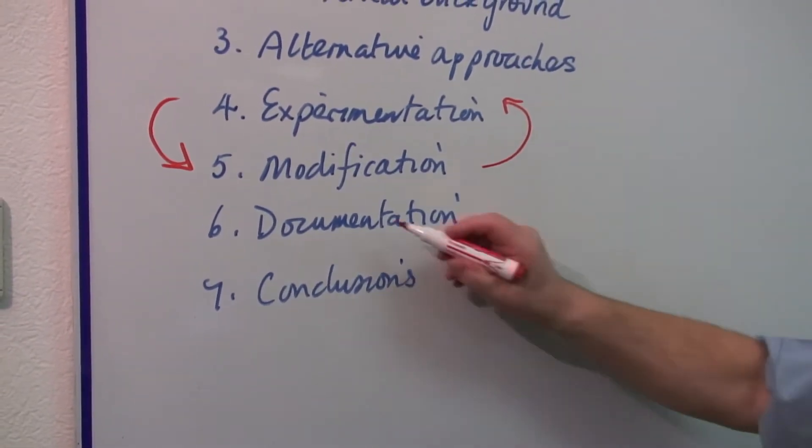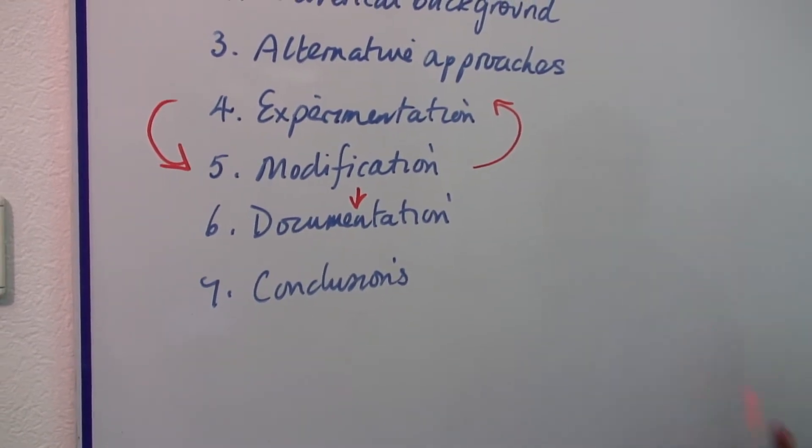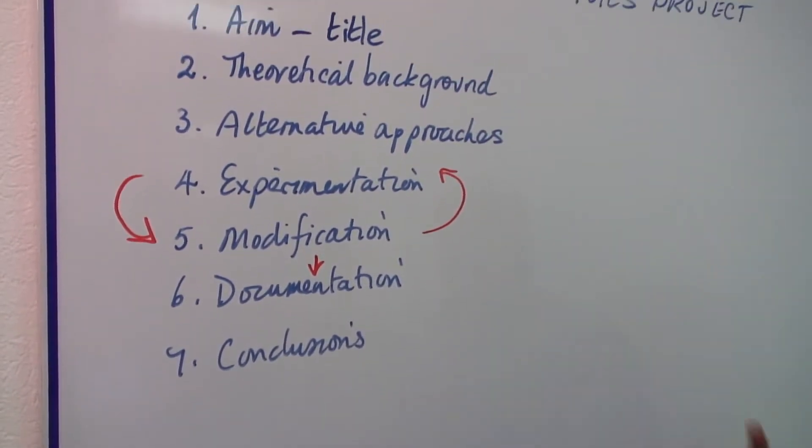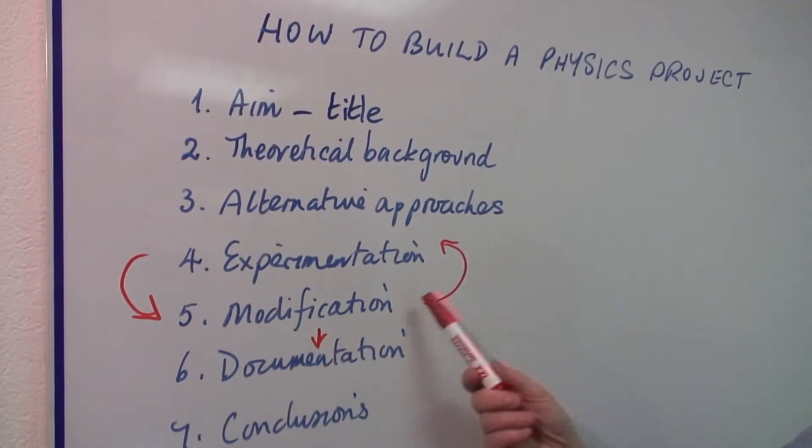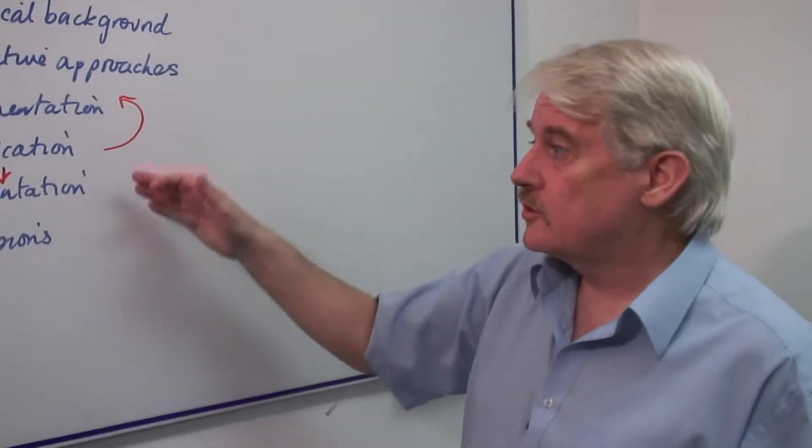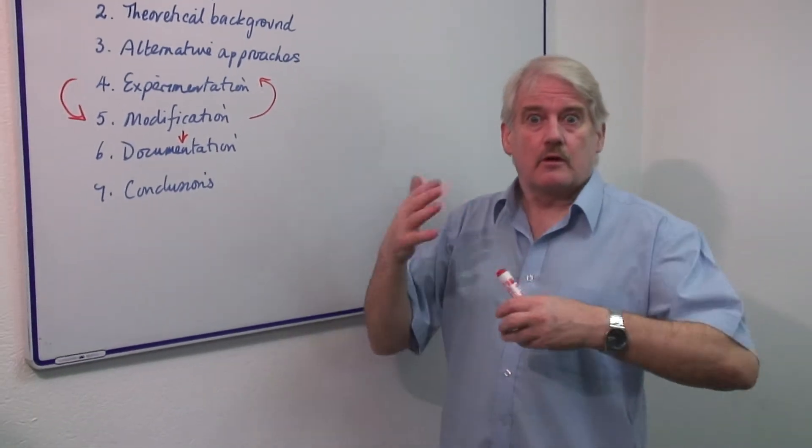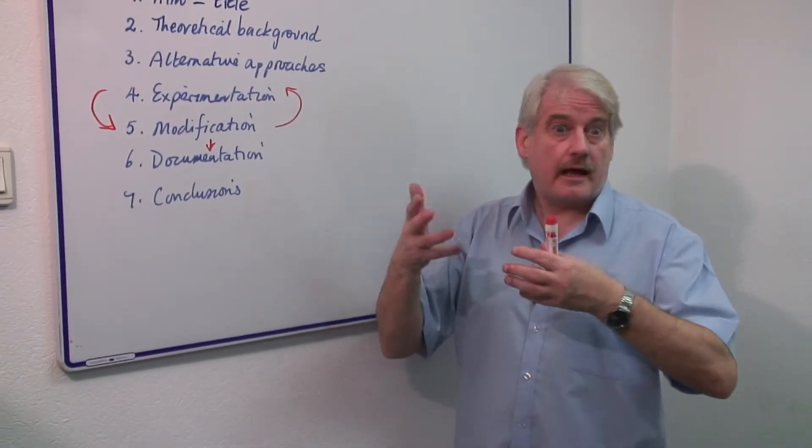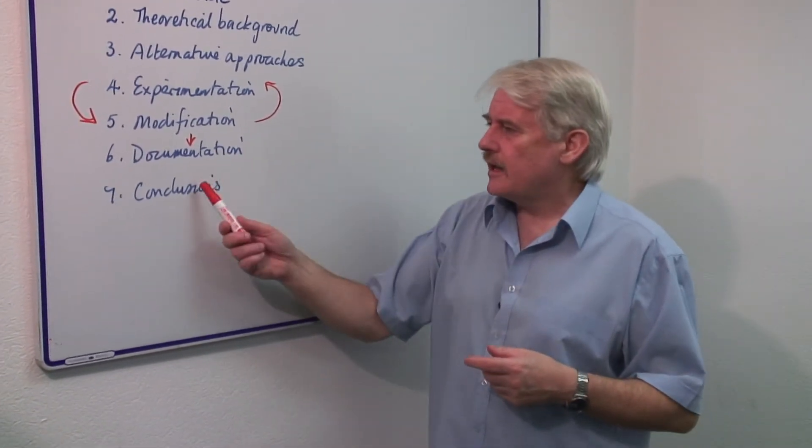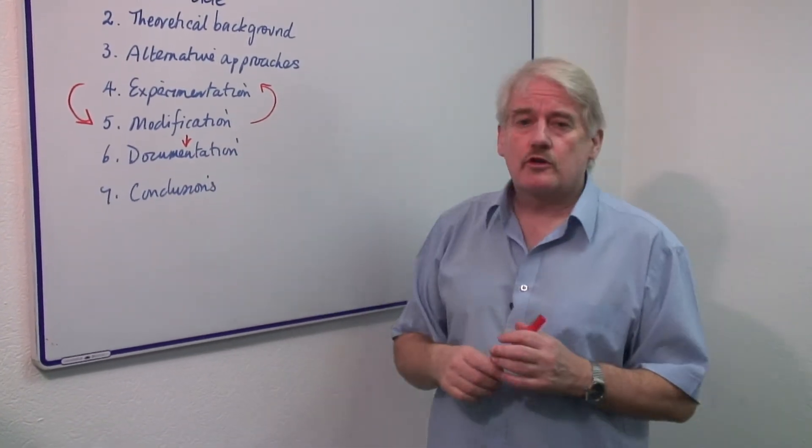And of course, from the modification we always document what we do. It is important to say within your project what modifications you made and why you made them, and why it is that you've included them in the documentation. It may be that you want to later on look at how the modifications affected your results. And only then, after you've finished all the documentation, can you do the conclusions.